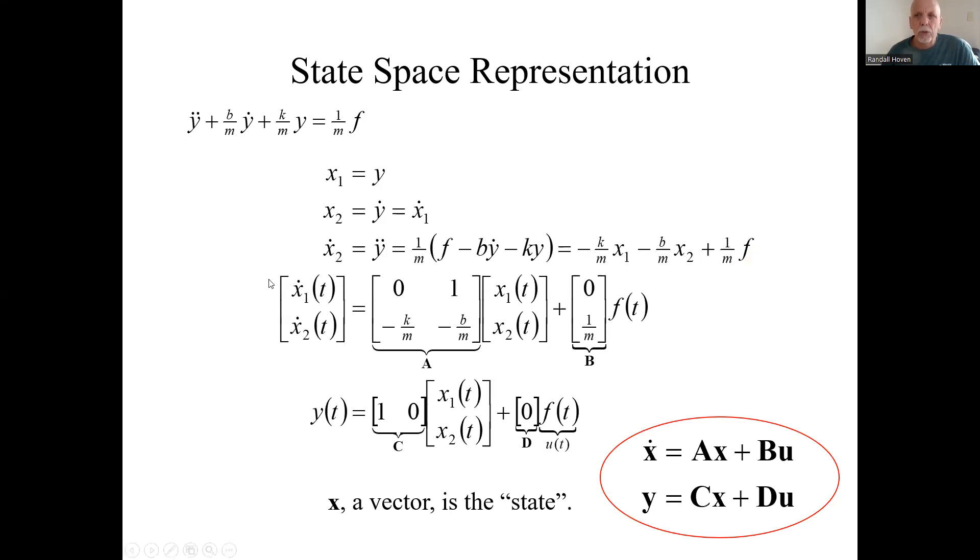Minus b over m x₂. You can put that in matrix notation. Here's the vector [x₁ dot, x₂ dot]. See that x₁ dot equals x₂, and x₂ dot equals minus k over m x₁ minus b over m x₂ plus 1 over m f.